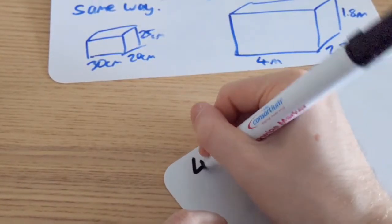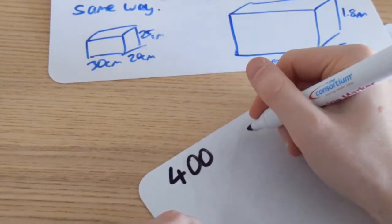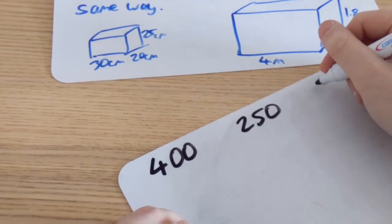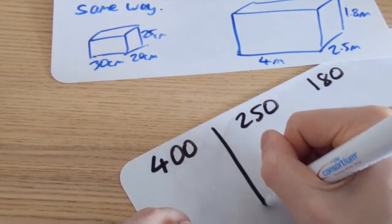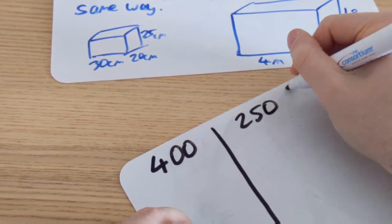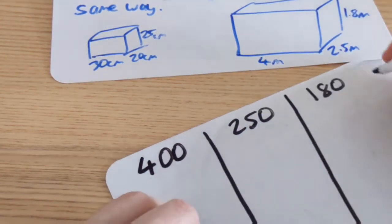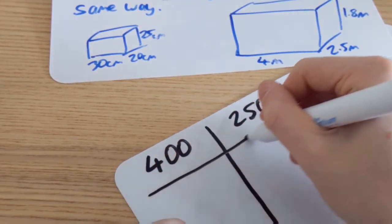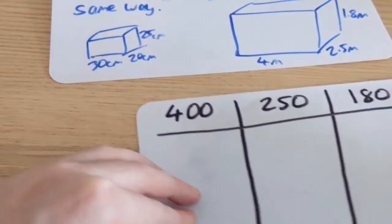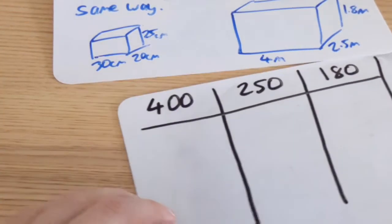I'm going to have 400cm, 250cm and 180cm. And they're going to be the dimensions of the container. What I've then got to do is align each side of the box with the side of the container. And as I've said, I've got to do that six different ways.